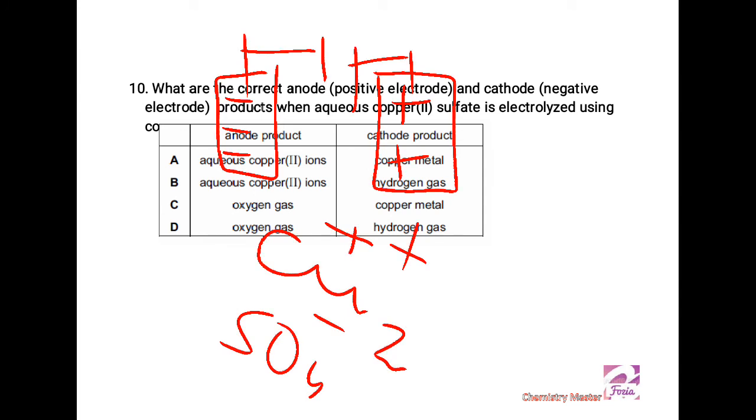The current starts attracting the cations towards cathode. The copper ions, aqueous ions, will go to the cathode and will get electrons and will be reducing there, so copper metal will be producing at cathode.